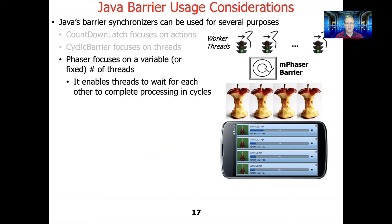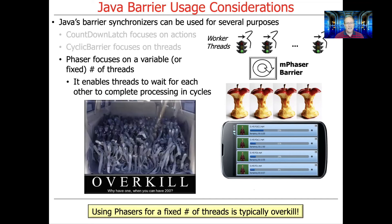The third type of barrier synchronizer is a phaser, and it can be used for either a variable or a fixed number of threads. Like the other synchronizers, it enables threads to wait for each other to complete their processing, usually in cycles, although one-shot processing is also possible. If you have a fixed number of threads, however, using a phaser is really overkill — you're probably much better off using a cyclic barrier or a countdown latch.